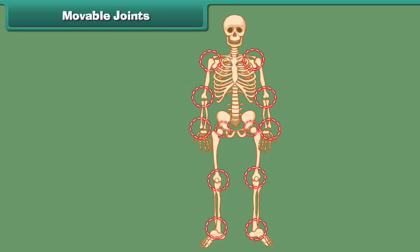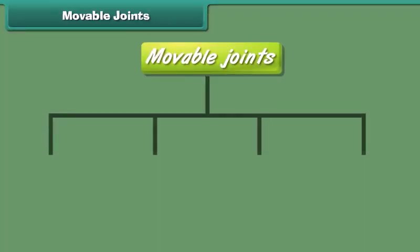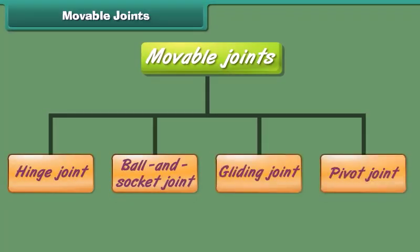Most movable joints allow free movement of the body parts, whereas in some joints only a little movement is possible. Moveable joints are grouped into four types on the basis of movement. Come, let us discuss each type in detail.